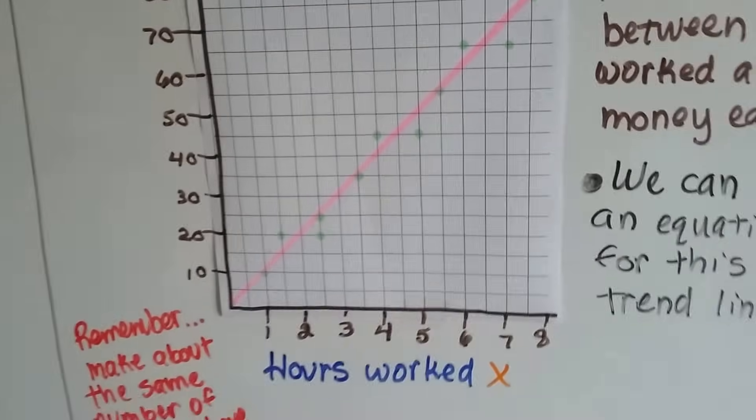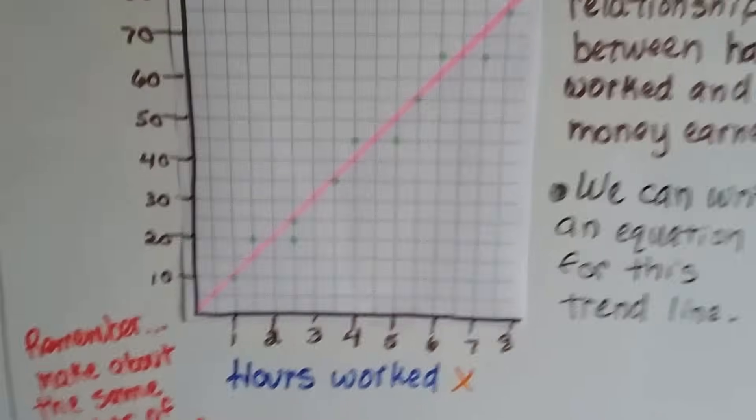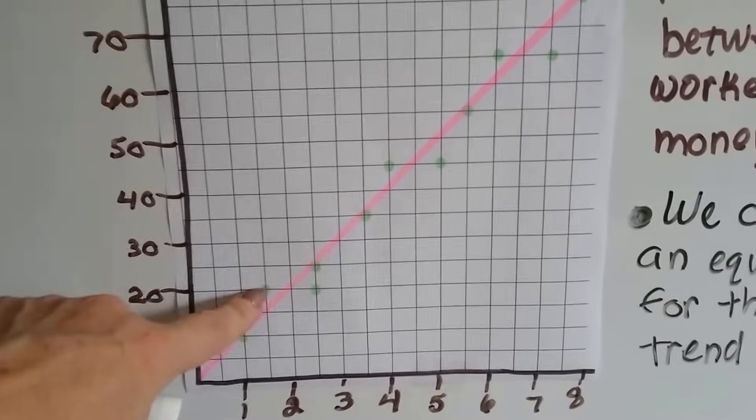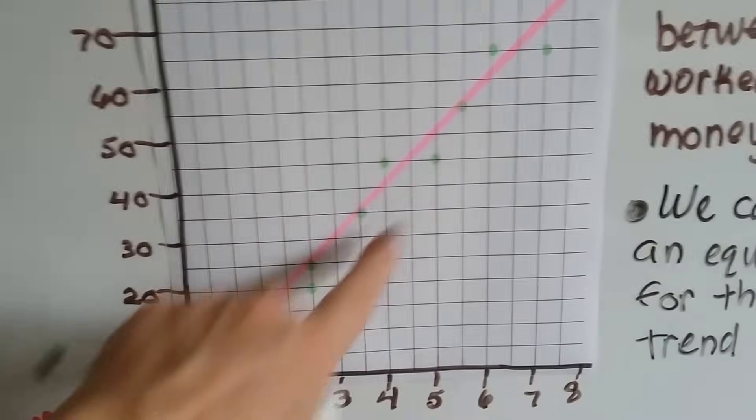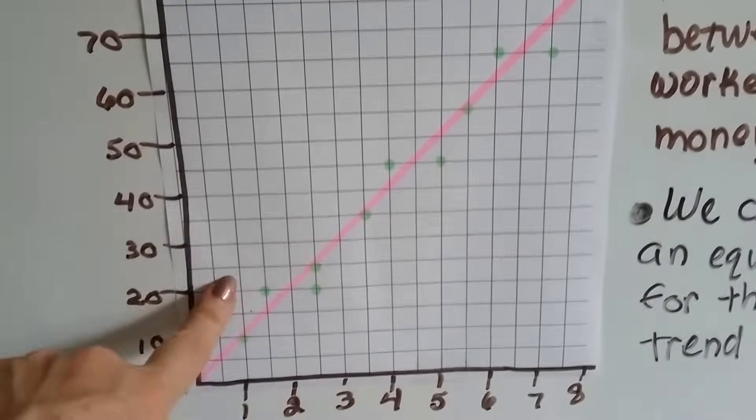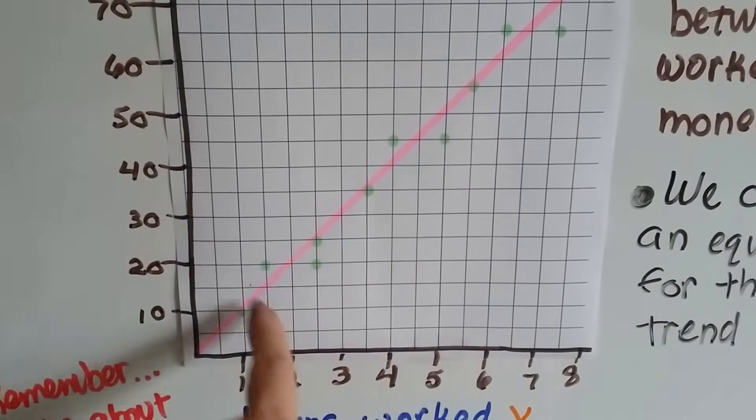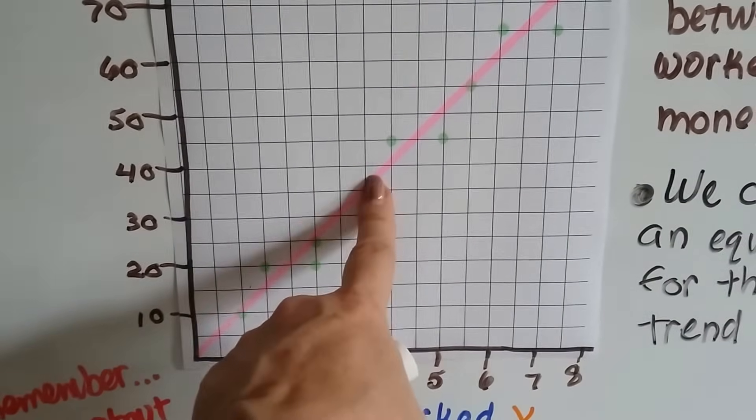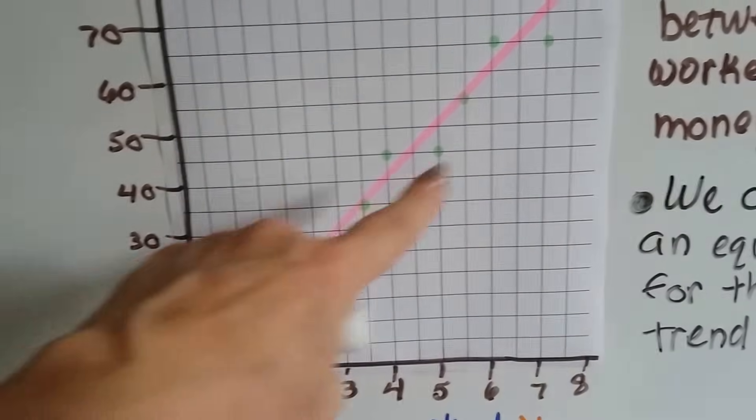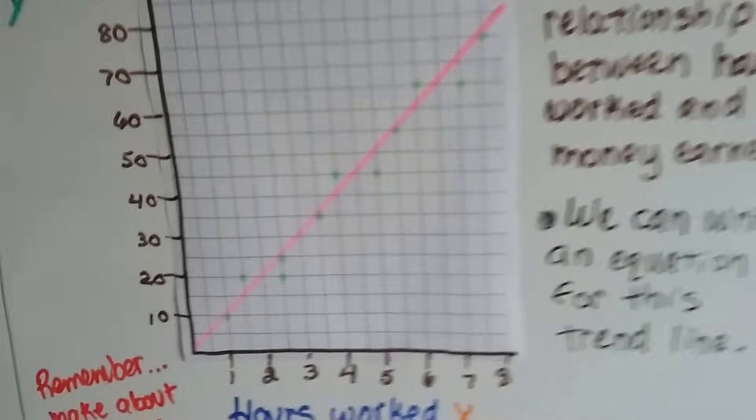The more points that are between it, the easier it is to do. You want to make sure that you've got several of these points above and below it when you do that. When I use 3.5, I've got a point here and a point here. So it's kind of even. See? I could have used this one and there would have been 2 above and 2 below. That would have worked also.